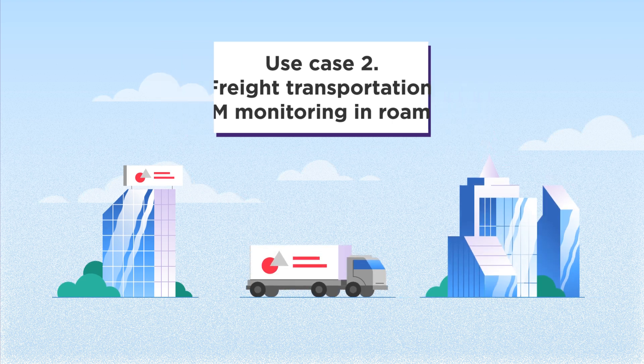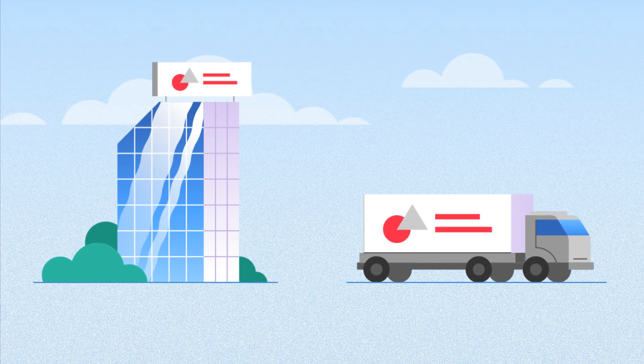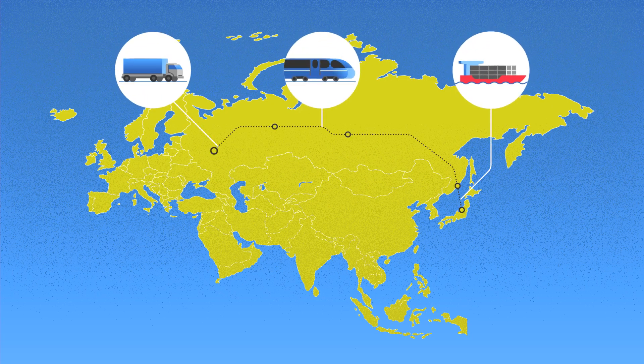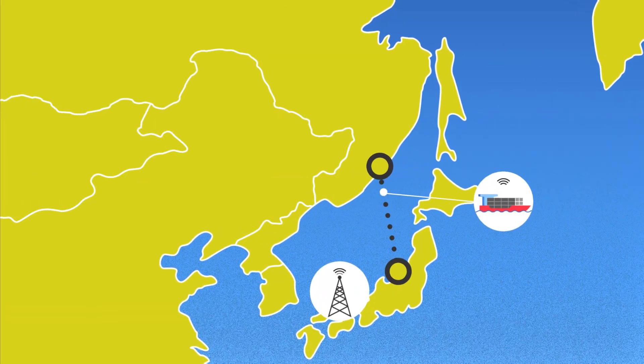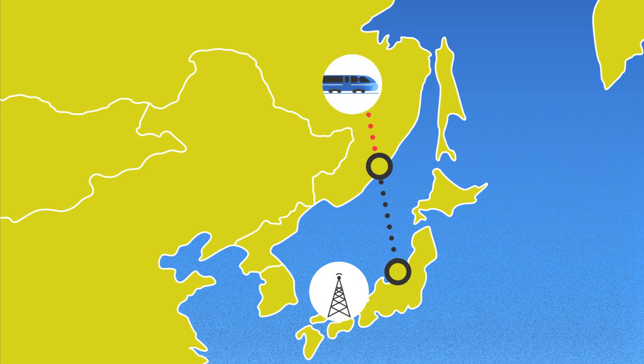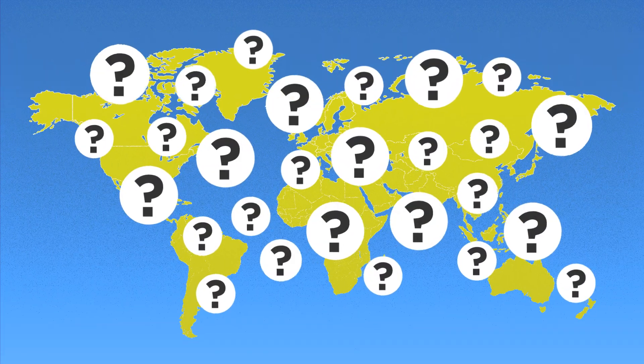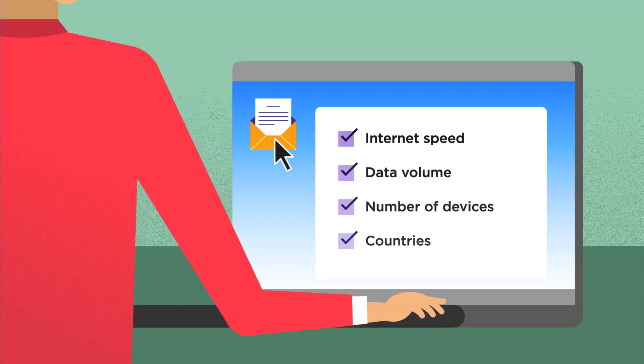Another example is M2M monitoring in roaming. Meet the freight company. It delivers cargoes from Osaka to Munich. To track cargo, the company needs a long-term contract for telecom services. The company turns to their home operator.